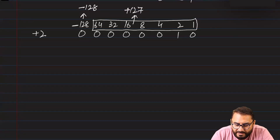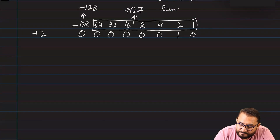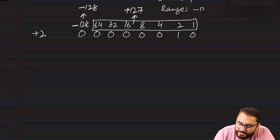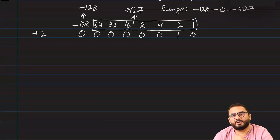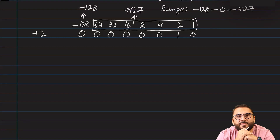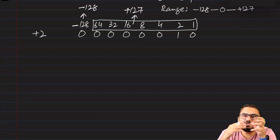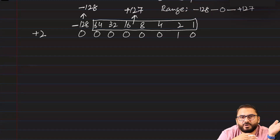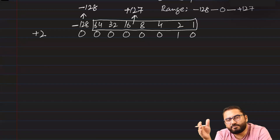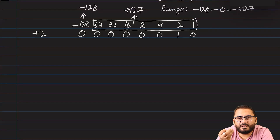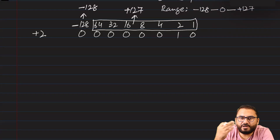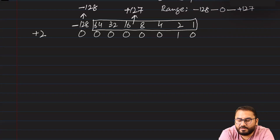The range of 2's Complement is from minus 128 to 0 and from 0 to plus 127. The total number of values we can represent is still 2 to the power of 8, which is 256. It is now not from 0 to 255 — rather it is from minus 128 to plus 127, with 0 included. These are again 256 numbers.